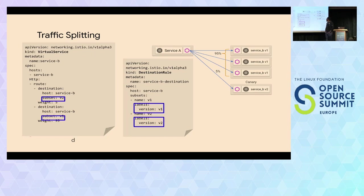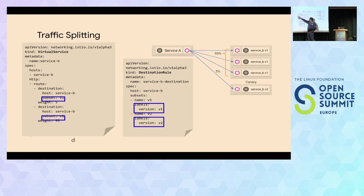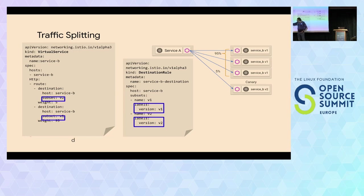Here's a specific example called traffic splitting. Say I have service B version 1 and I'm introducing version 2. I want to do a canary deployment — send 95% of traffic to version 1 and 5% to version 2. In the Istio world, you use two objects: the destination rule, which declares the subsets (version 1 and version 2), and the virtual service, which says 95% of traffic goes to version 1 and 5% to version 2. This is just one example of traffic routing that Istio can do.